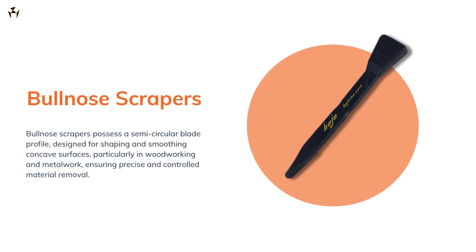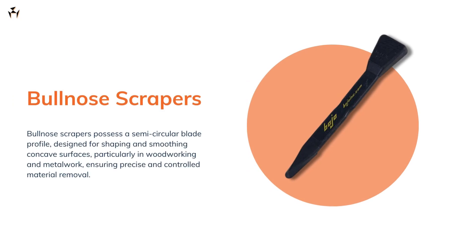These scrapers are named bullnose scrapers because they look a bit like a bull's nostrils. People use them to scrape surfaces that are flat or half-round. The cutting edge is on a circular disc shape, covering about two-thirds of the circle.